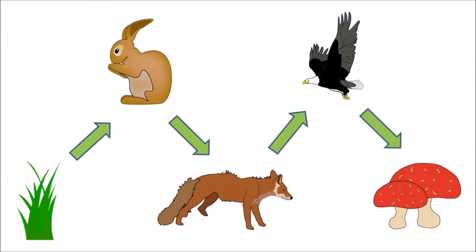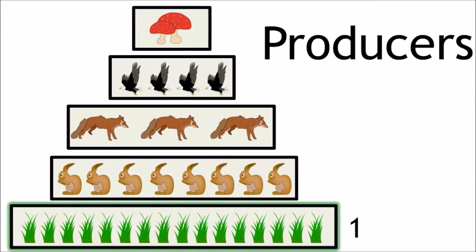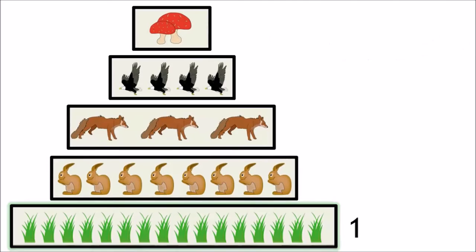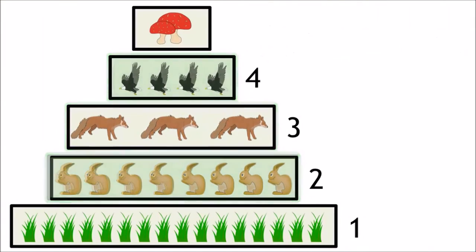So to summarize, trophic levels are the number of steps an organism is within a food chain. The first trophic level is the green plants, the producers. And as you go up a trophic level and you go along a food chain of an ecosystem, you move on to the consumers, and finally, the decomposers.